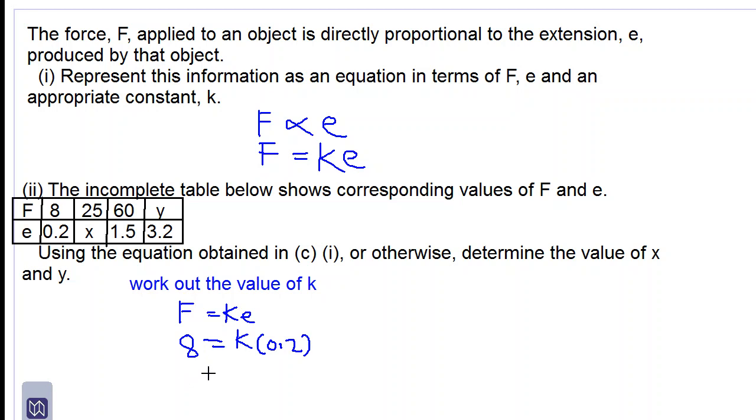To find k, divide both sides by 0.2. So k = 8 ÷ 0.2 = 40. We've now found that k equals 40.